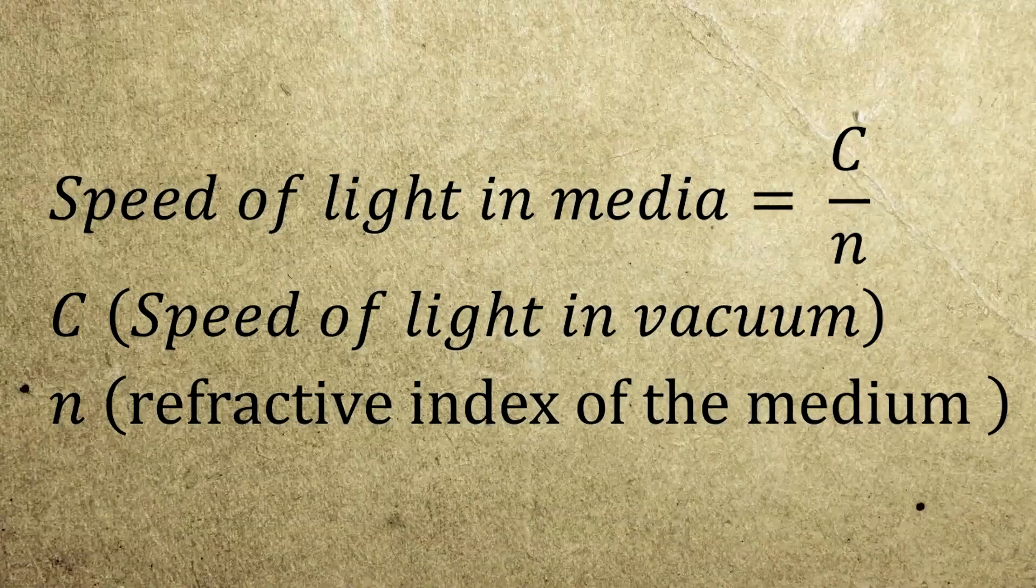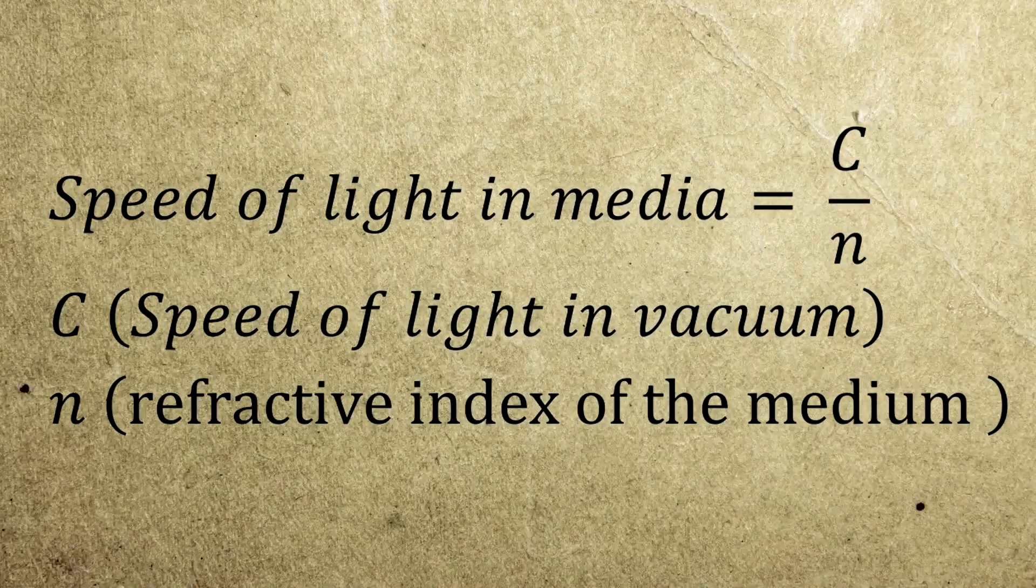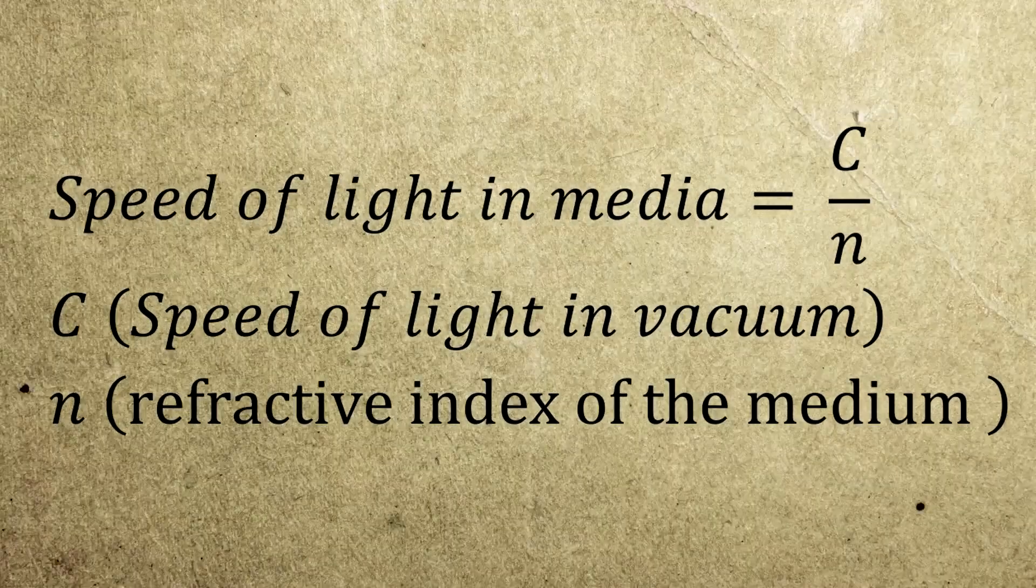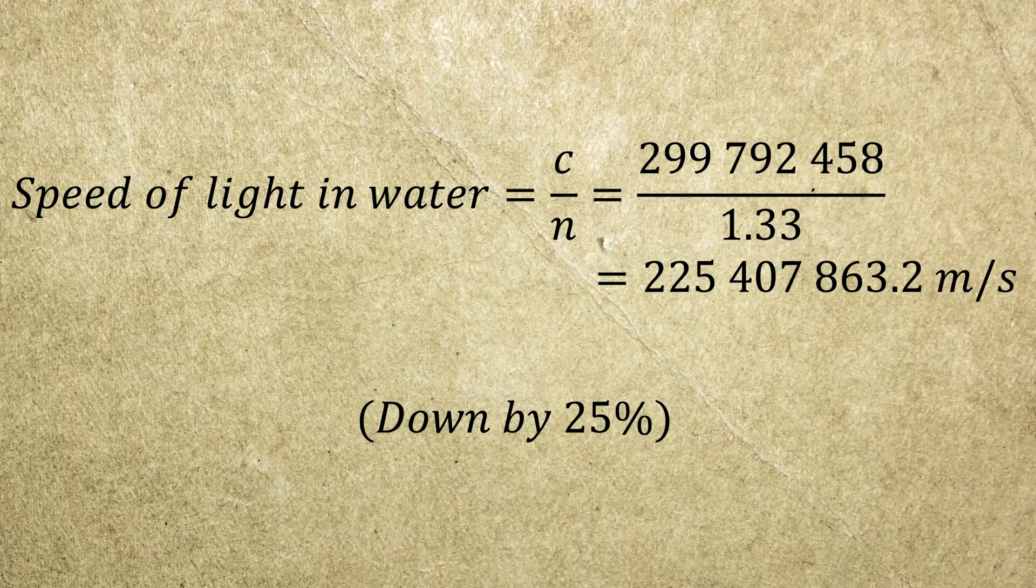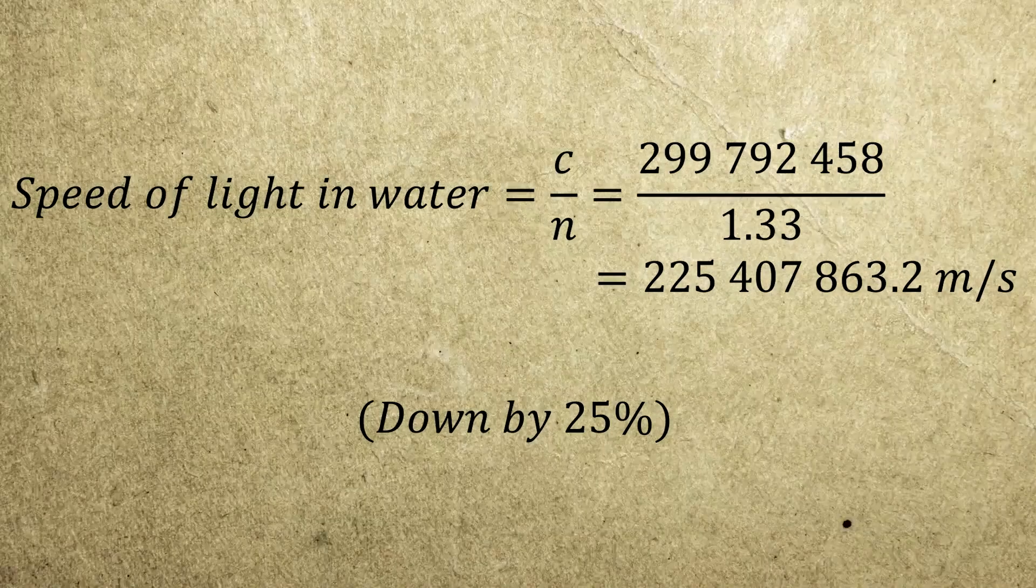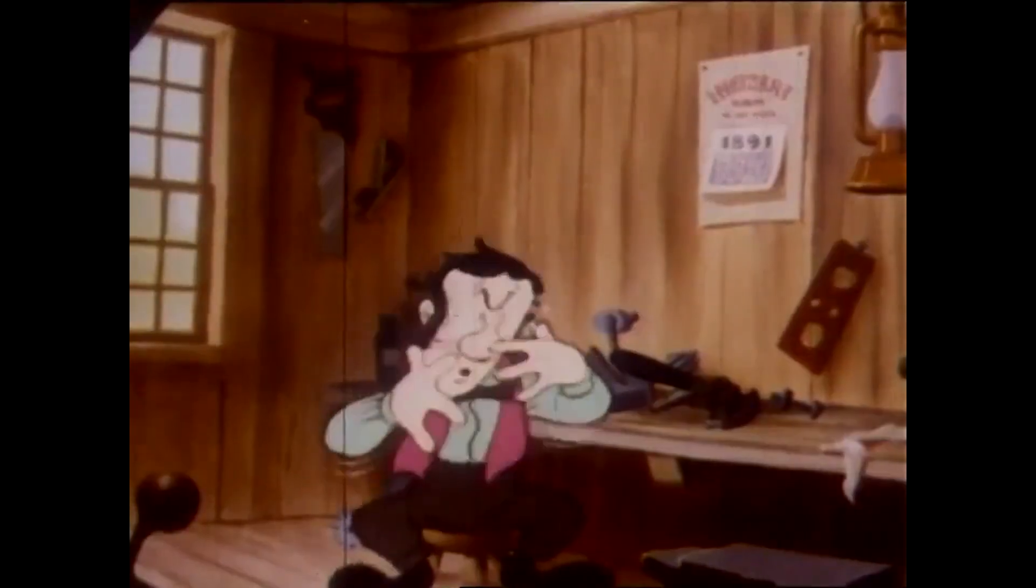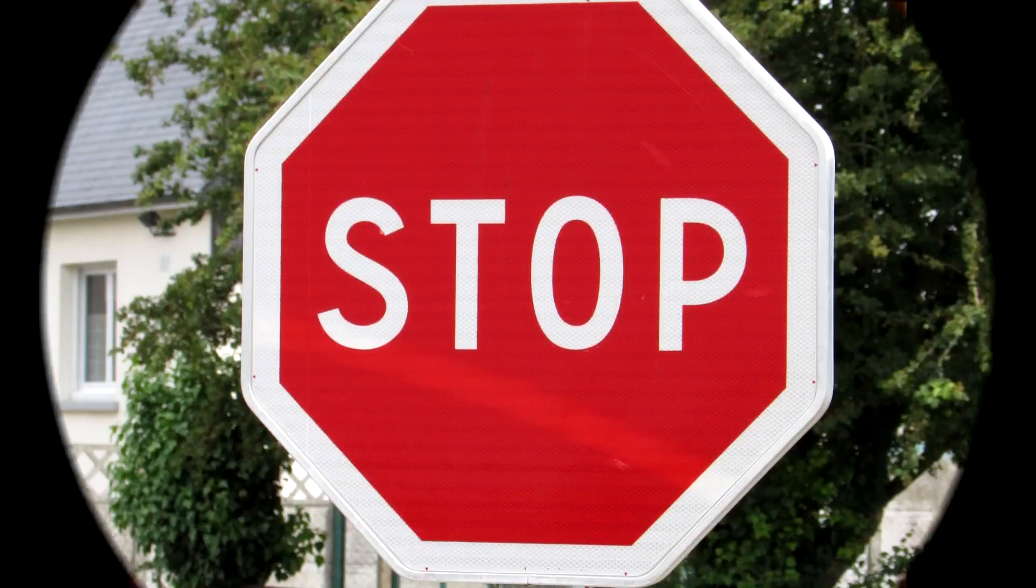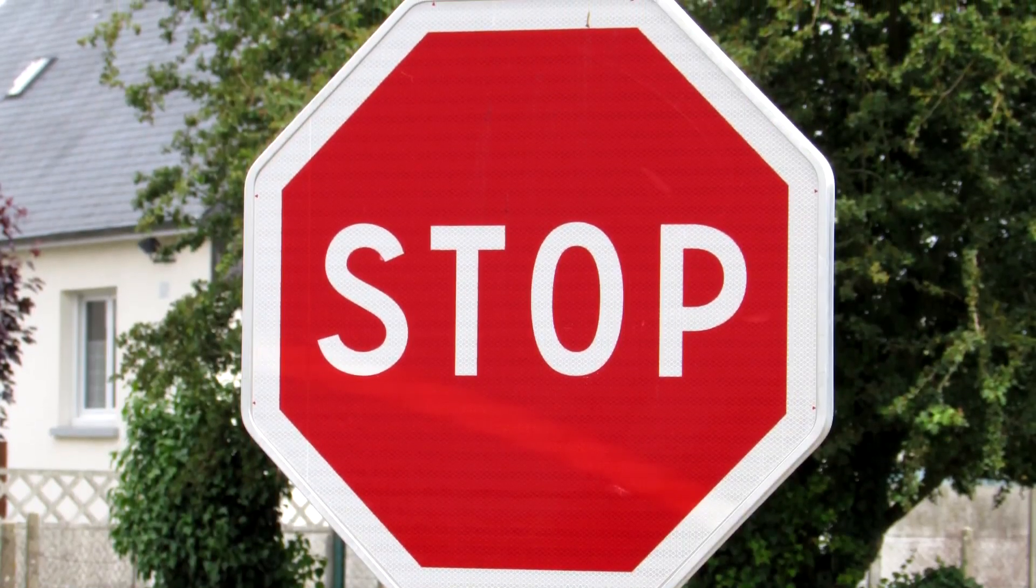For example, water has an index of 1.33. Therefore, light in water travels at about 75% of its usual speed. So there is a way to go faster than light, but only if you slow it down first, because it is certainly possible for particles to travel through mediums faster than light travels in there.